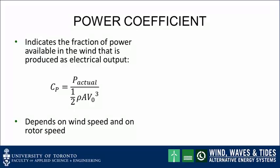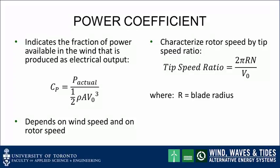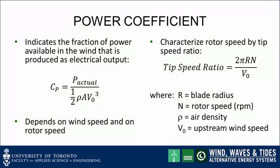C sub p depends on wind speed and on rotor speed. Rotor speed is characterized by comparing it to the wind speed using the tip speed ratio. The tip speed ratio is equal to the velocity in the tangential direction at the farthest extent of the rotor or blade — that would be 2π r n, where r is the blade radius and n is the rotor speed — divided by V0, the upstream wind speed. So we can characterize the performance of a wind turbine at any given wind speed by the power coefficient and the tip speed ratio.